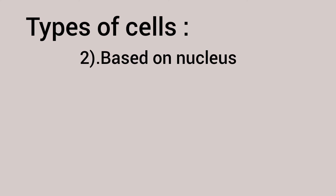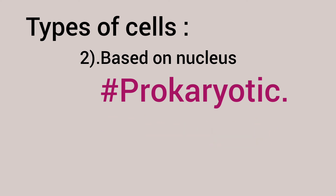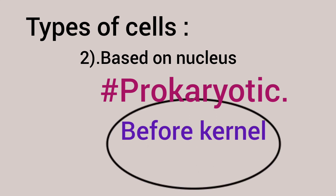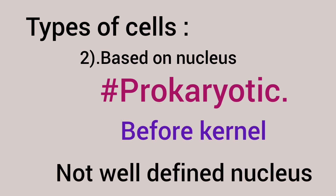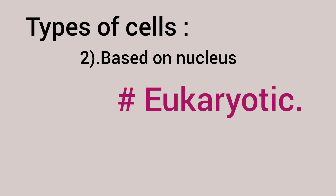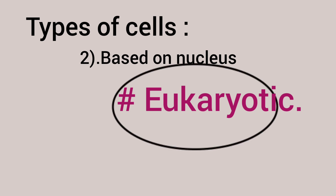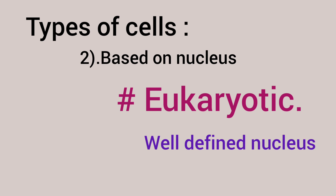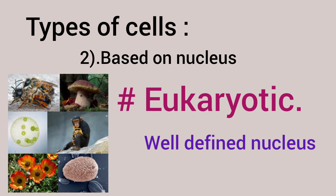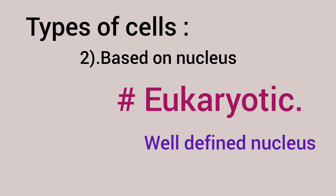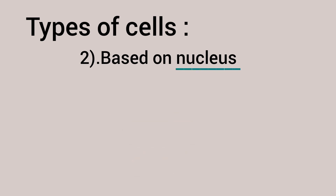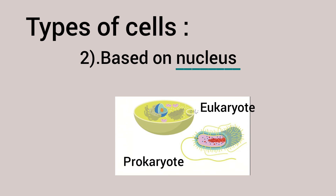Now, types of cells based on nucleus. There are two types: prokaryotic and eukaryotic. Prokaryotic means 'before kernel' — pro means before, and karyon means nucleus — so prokaryotic cells have a not well-defined nucleus. Examples: bacteria, mycoplasma. Eukaryotic cells means 'true kernel' — eu means true, karyote means nucleus — so eukaryotic cells have a well-defined, advanced nucleus. Examples: fungi, animalia, plantae, protista. A nucleus has nuclear membrane, nucleolus, and nucleoplasm. Prokaryotic cells lack this defined structure, while eukaryotic cells have a true nucleus.